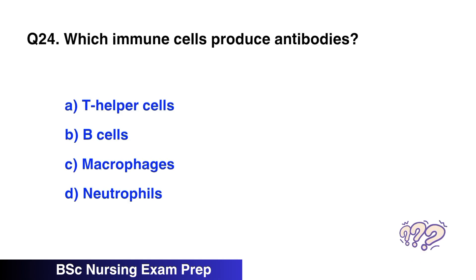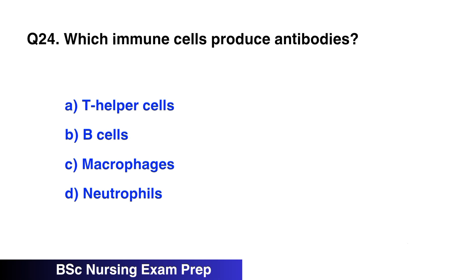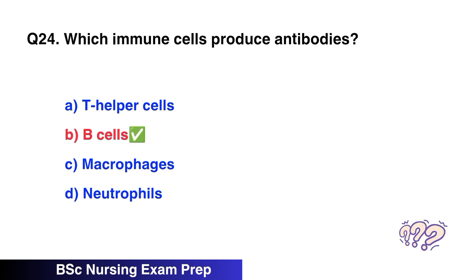Question 24. Which immune cells produce antibodies? The correct option is B, B cells.